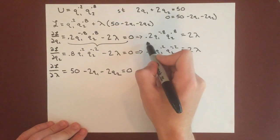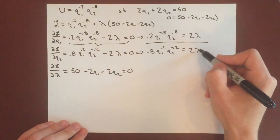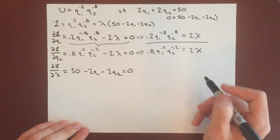And then we're going to divide these two. And when we divide it like this, we can cancel the lambdas, and so now we just have two variables, q1 and q2.